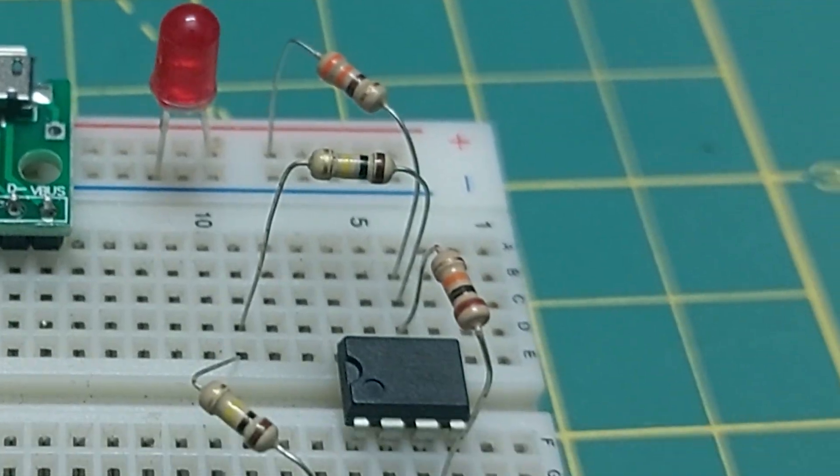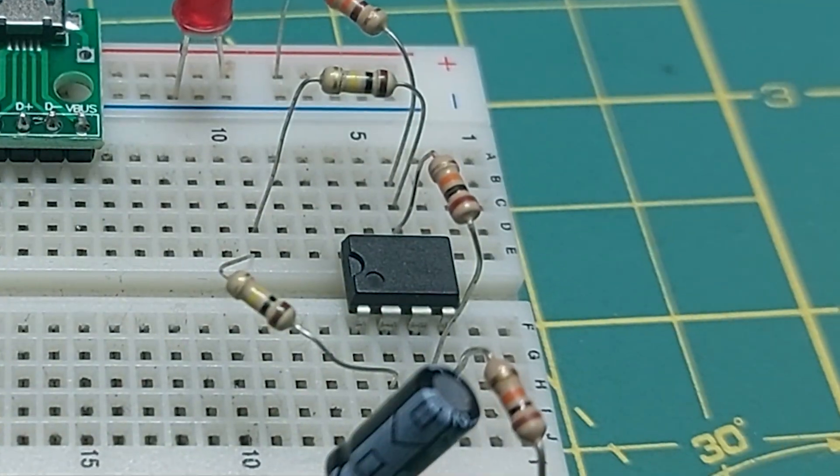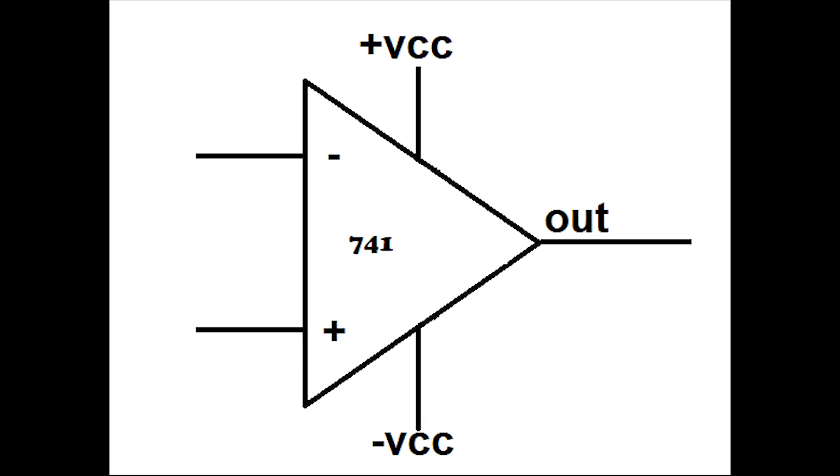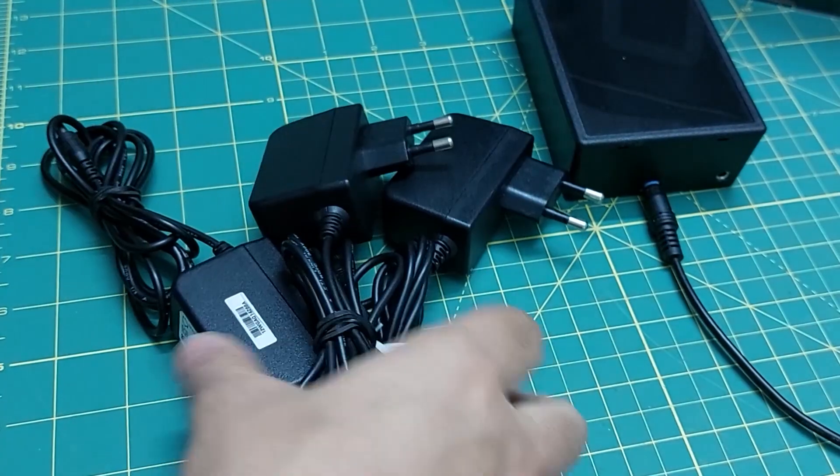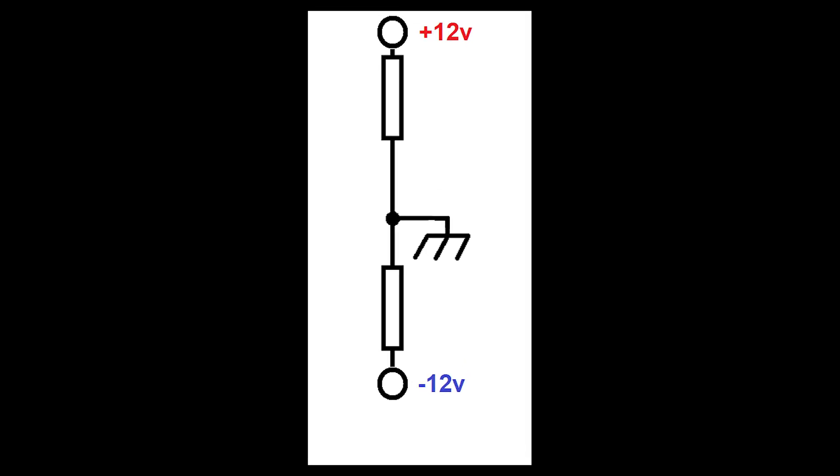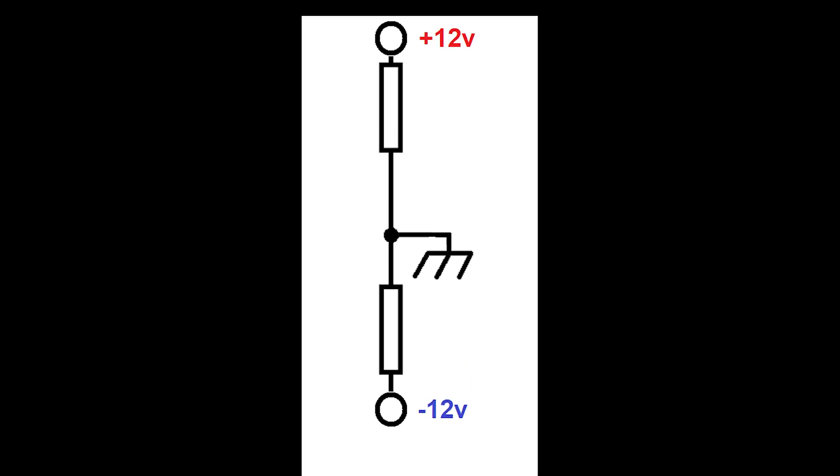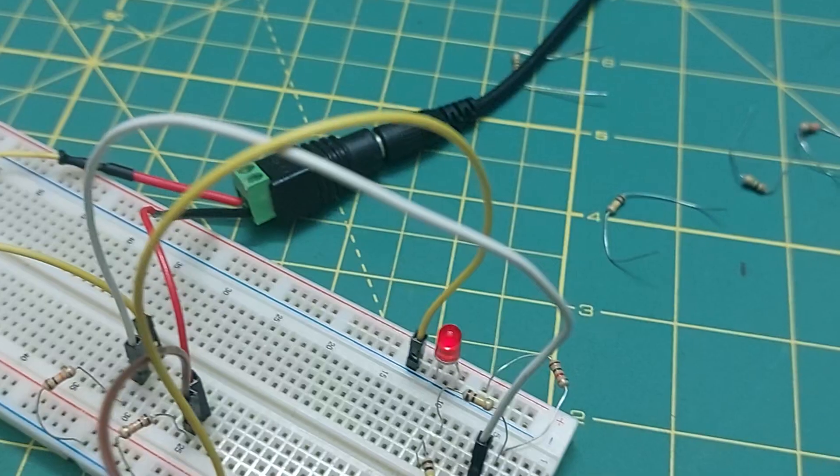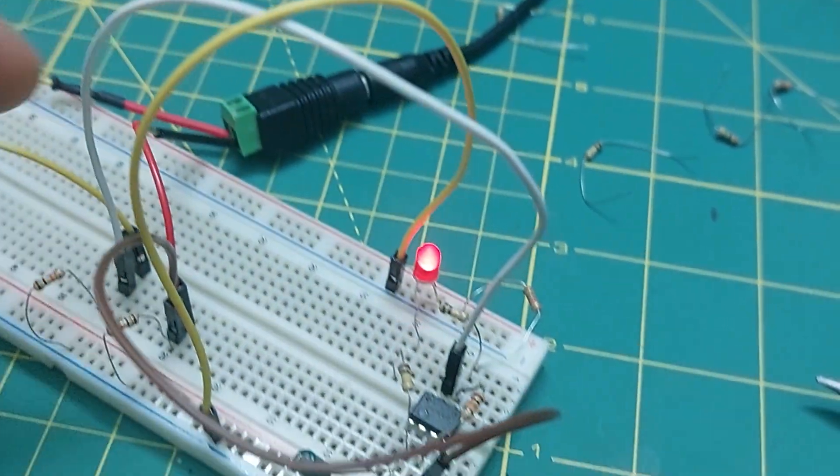We ran into a problem, the oscillator isn't working. But the reason is actually pretty simple. The op-amp needs a dual power supply. Normally, that means you'd need two adapters to power it properly. But there's an easier workaround. If you connect two resistors in series, you can use the middle point between them as the ground. That way, if you're using a 12 volts adapter, the op-amp sees plus 6 volts and minus 6 volts across its power pins. And just like that, the circuit is working.